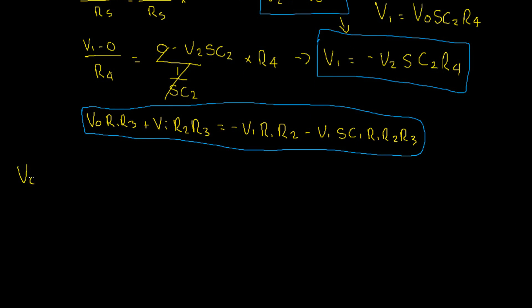This gives us VO R1 R3, this term is unchanged, plus VI R2 R3. This term again is unchanged and that equals negative our term for V1, which is now VO SC2 R4 times R1 R2. Subtract our V1 term again, which is VO SC2 R4, and then all of that times SC1 R1 R2 R3.